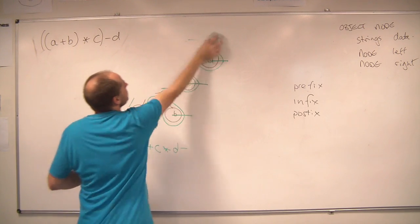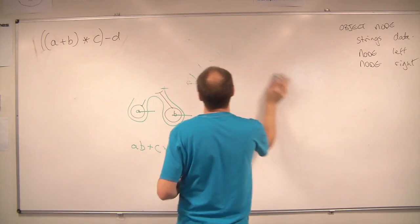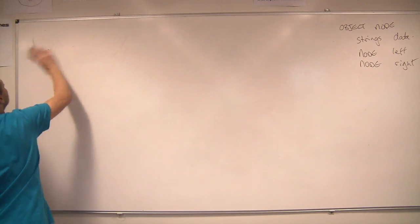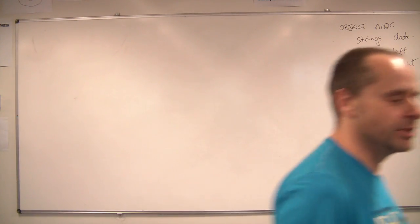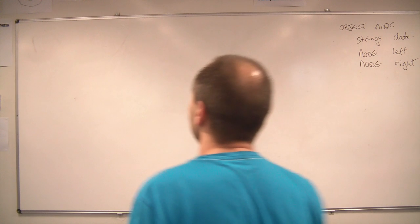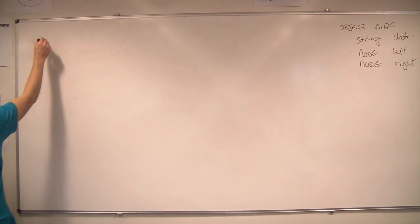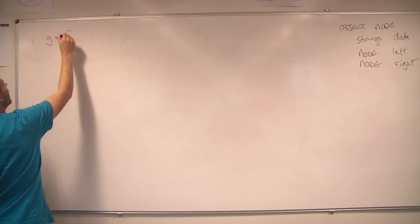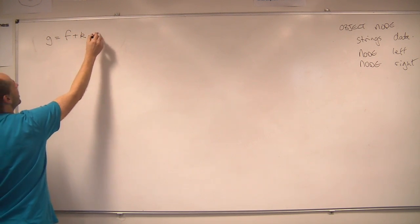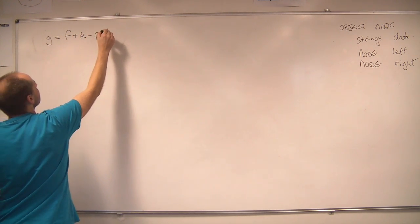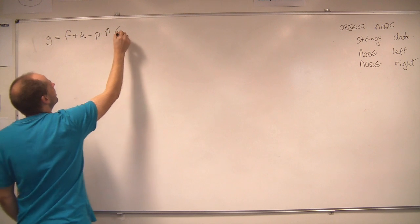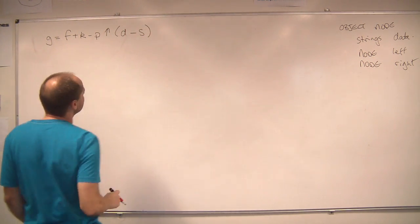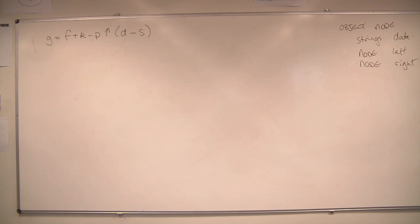Let's do something — I'll make the tree a little bit bigger this time. Let's have one with an assignment in it. So let's have G equals F plus K minus P to the power of D minus S. Okay, so that's what we'll have a go at doing.